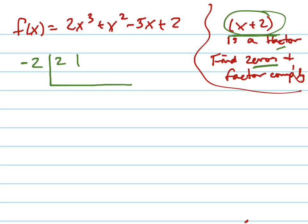Put a negative 2 out front. 2, 1, I'm grabbing all these coefficients. Let me erase that and rewrite that. Bring this down, 2, multiply, negative 4, add straight down, negative 3, multiply, that's 6...